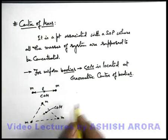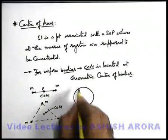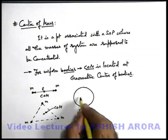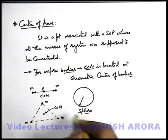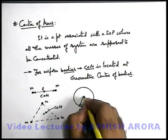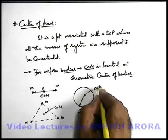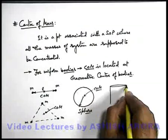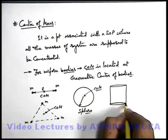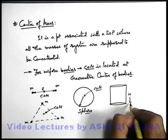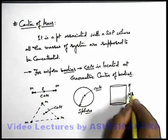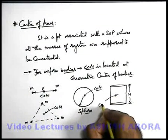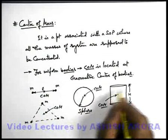If we talk about a uniformly dense object like a sphere, or a right circular cylinder, say the cylinder is of height h. If it is uniformly dense, we can state that the centre of mass will be located at the height h by 2, which is the geometric centre of the object.